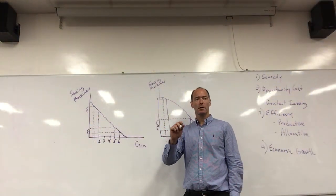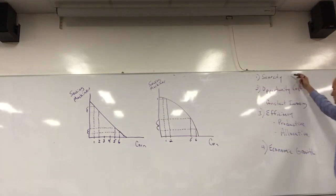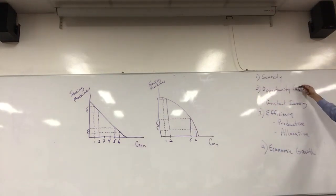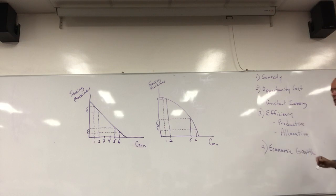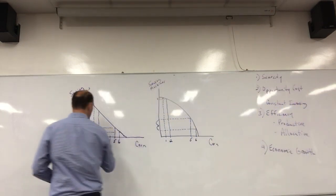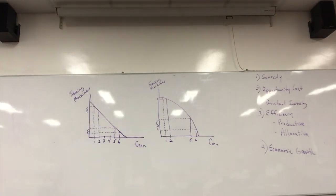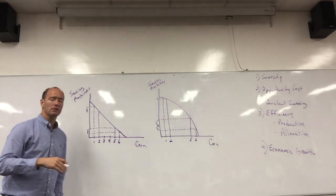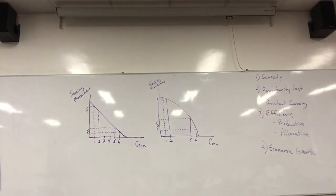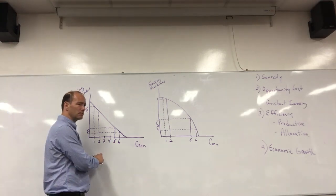I want to cover these four topics: scarcity, opportunity cost, efficiency, and economic growth. The first model we do is called the production possibilities model. After this we'll do circular flow, then supply and demand, and eventually aggregate supply and aggregate demand. So we'll learn lots of models of how the economy works in this course. This is the first one — the production possibilities model.